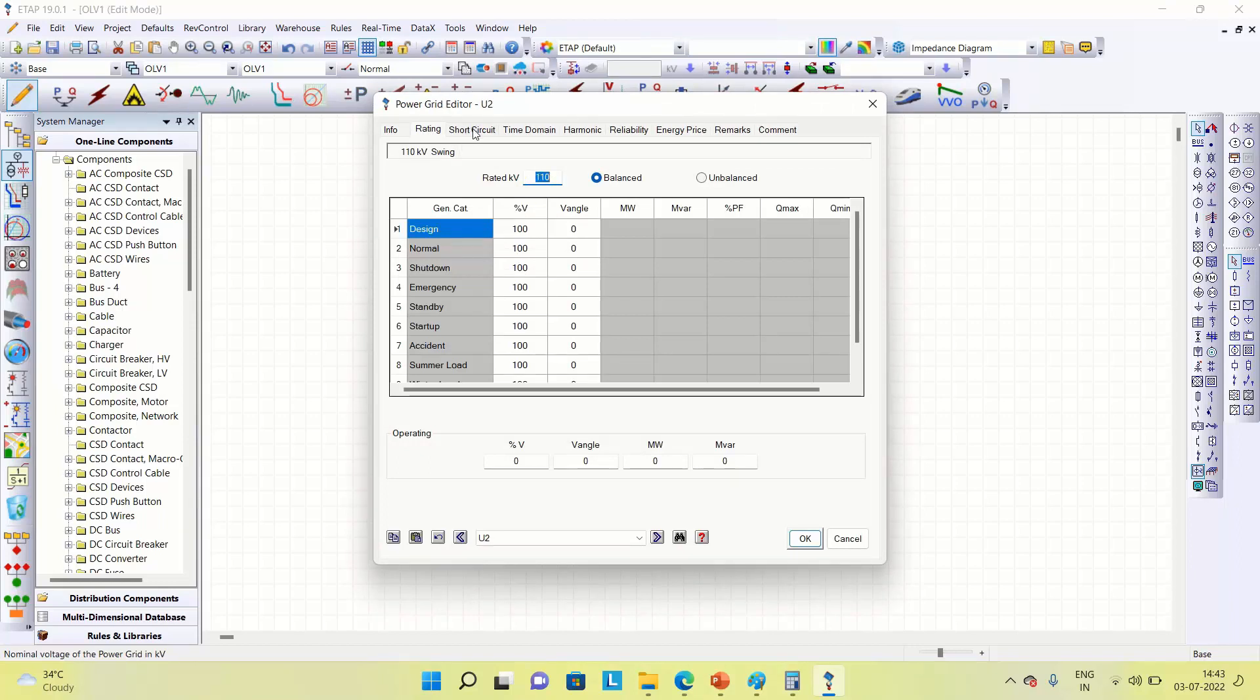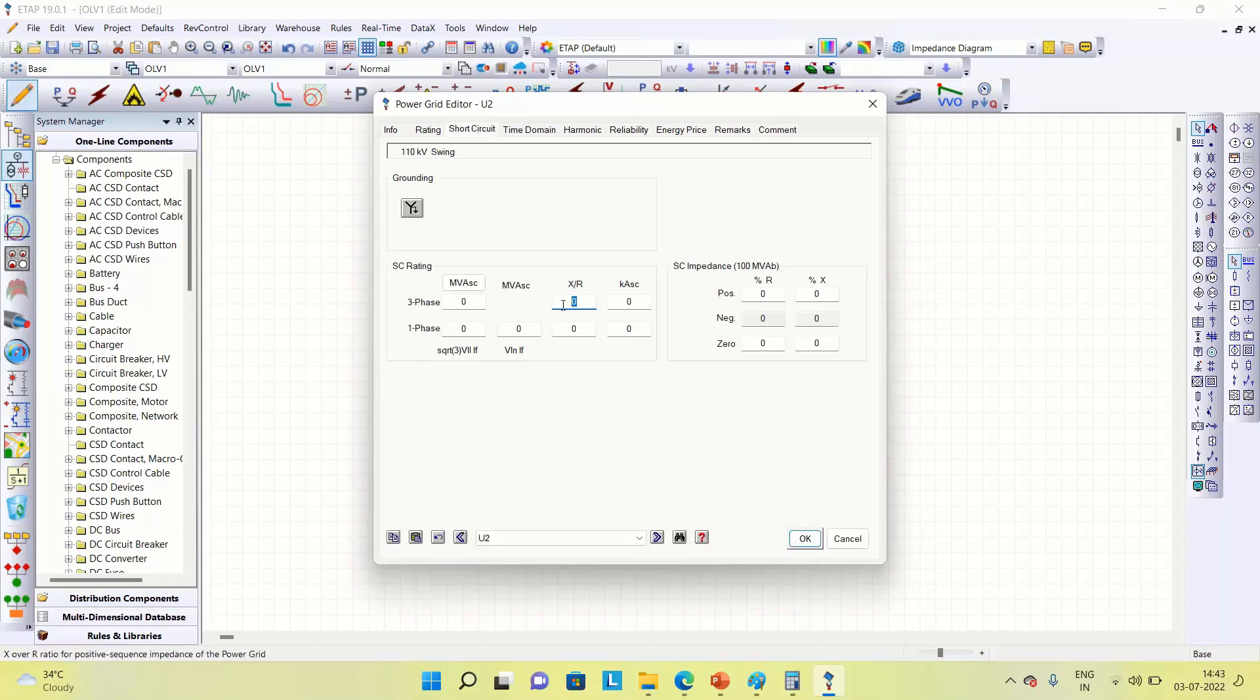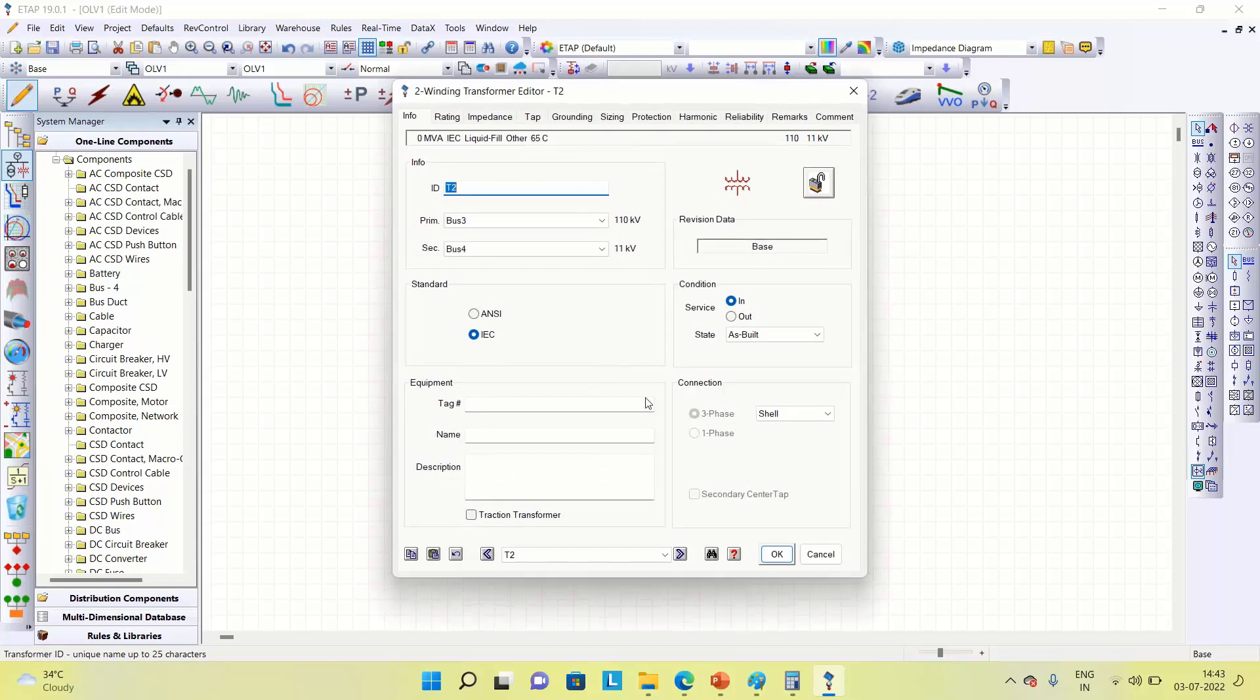Okay, now let's provide some input value to the source. Already 110 kV is available. Let's go for X/R ratio 14, so this is 40 - that means three-phase fault current is 40 kilo amps and so is single-phase fault current.